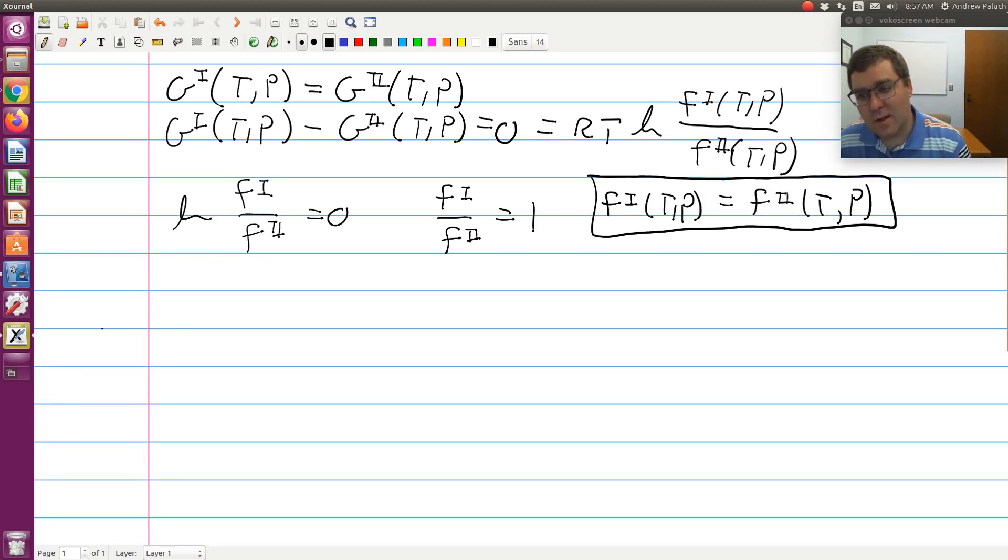And then I could take my fugacity, and I could expand it as fugacity coefficient times P is equal to fugacity coefficient times P. But what would happen is if we were dealing with mixtures, we'd have mole fraction in phase one and mole fraction in phase two here. You could still do it, but you'd get mole fractions in there. But in this pure component case, mole fraction in theory would be one in both cases.